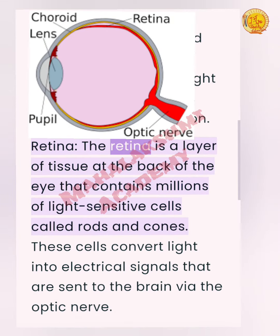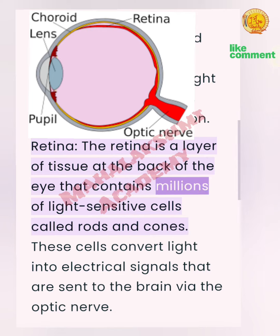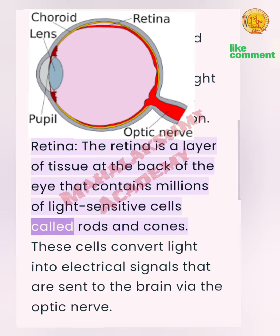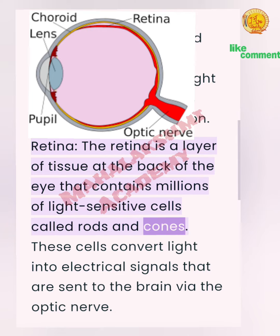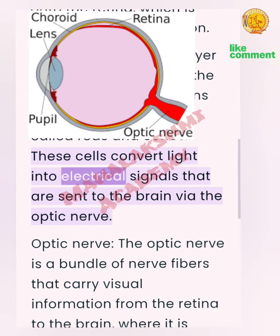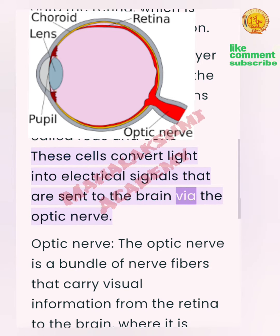Retina: The retina is a layer of tissue at the back of the eye that contains millions of light-sensitive cells called rods and cones. These cells convert light into electrical signals that are sent to the brain via the optic nerve.